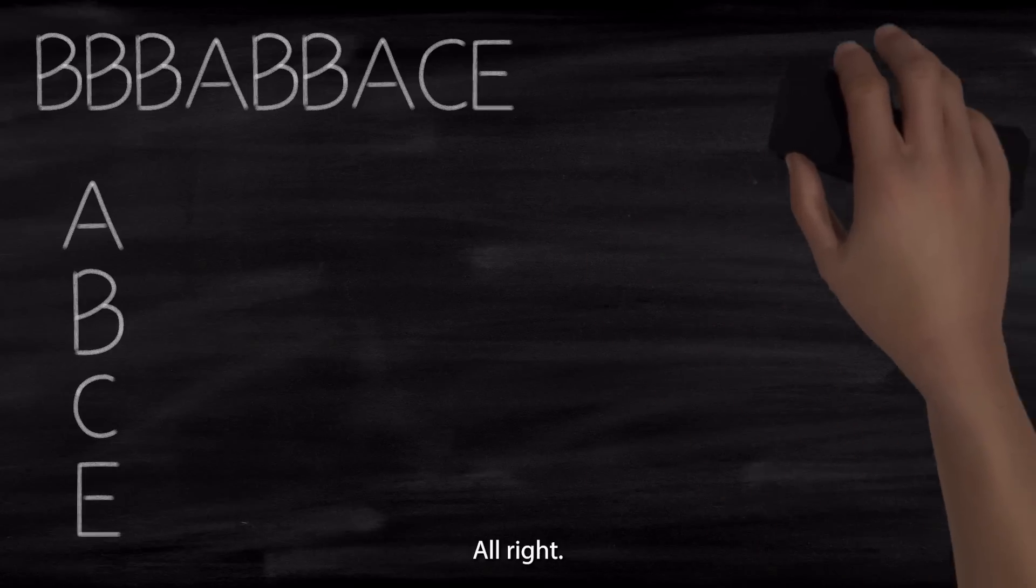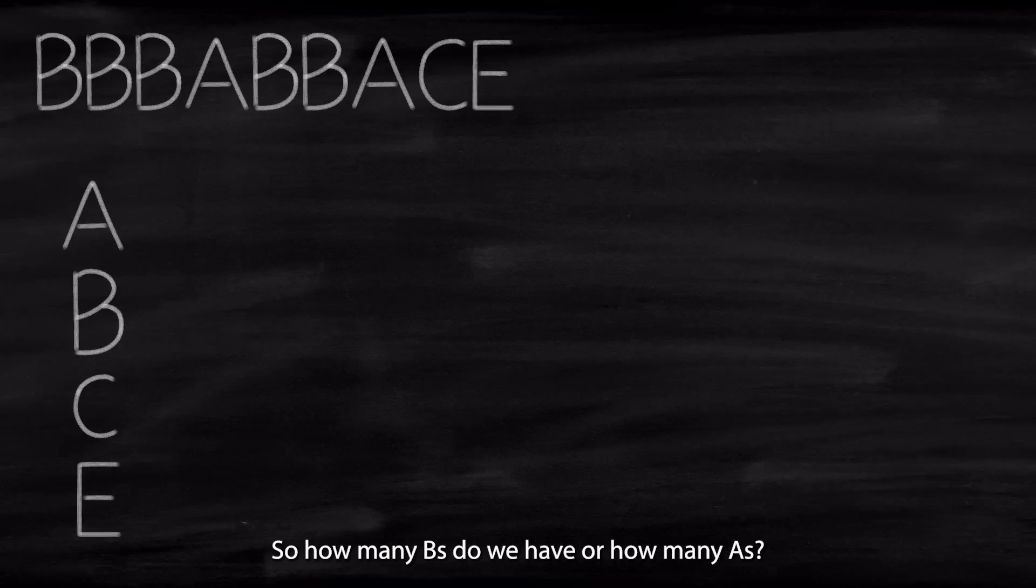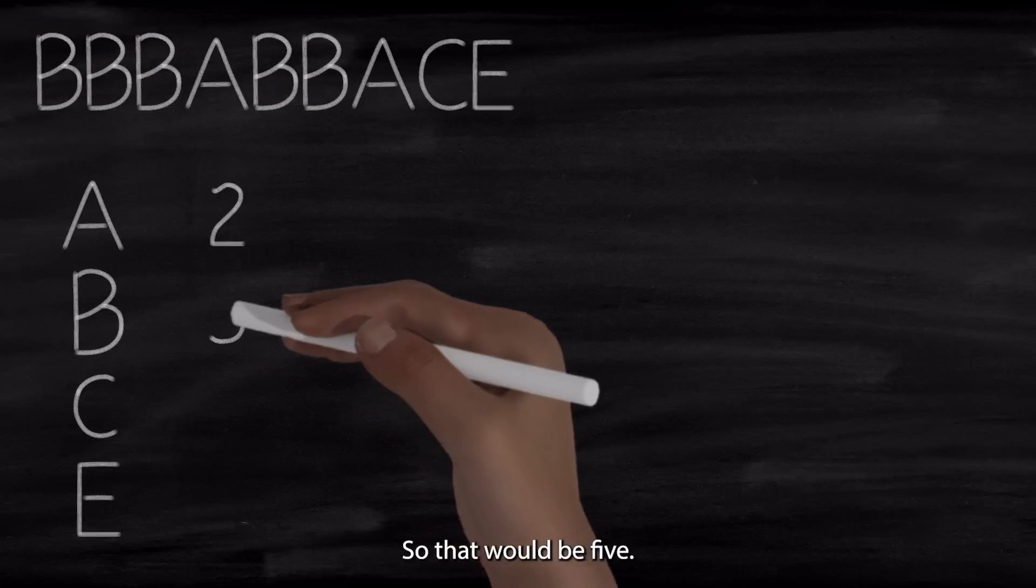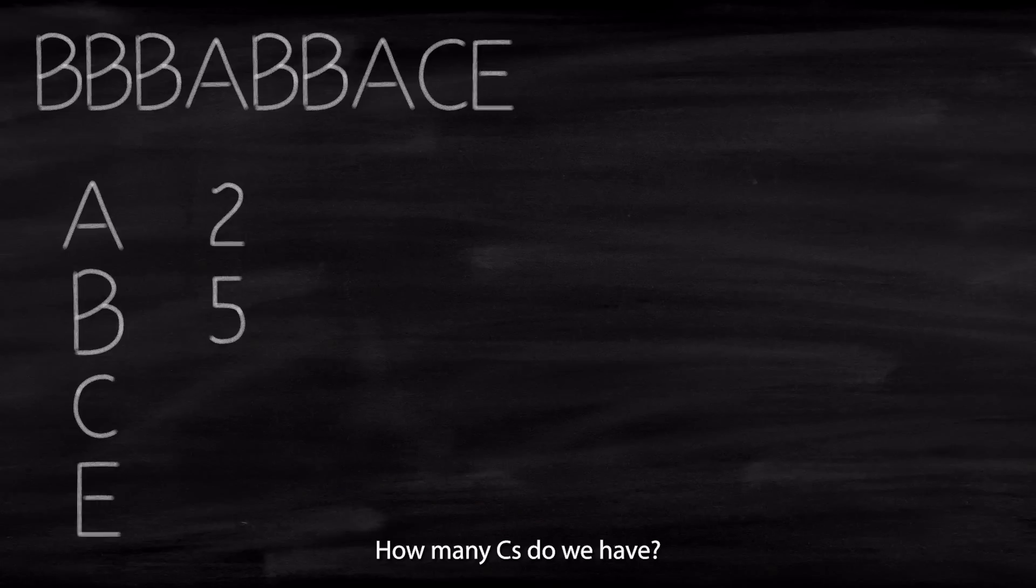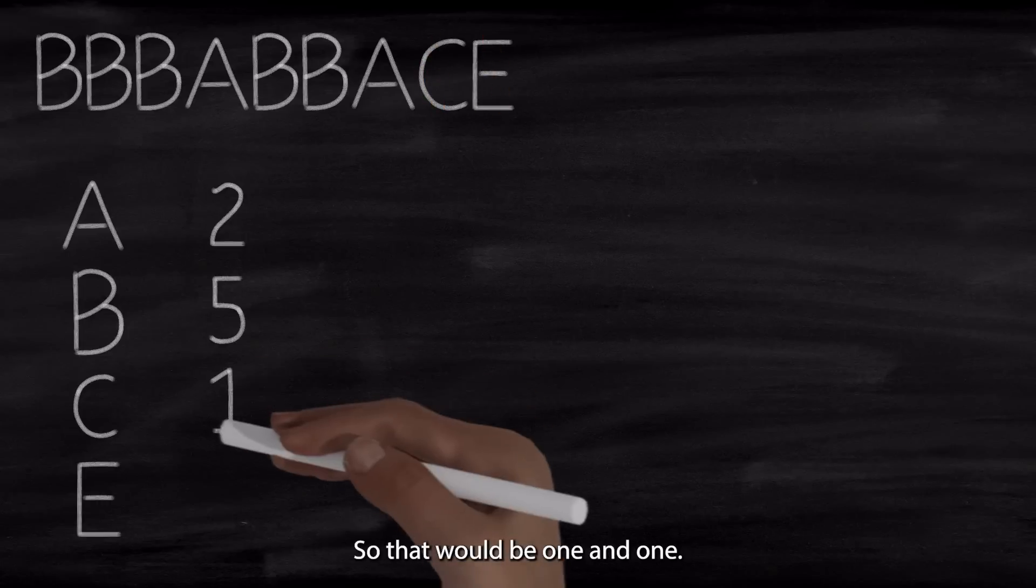All right. So how many Bs do we have? Or how many As? Let's count the As. So that would be 1 and 2. How many Bs do we have? That's 1, 2, 3, 4, 5. So that would be 5. How many Cs do we have? We have got 1. And E also 1. So that would be 1 and 1.